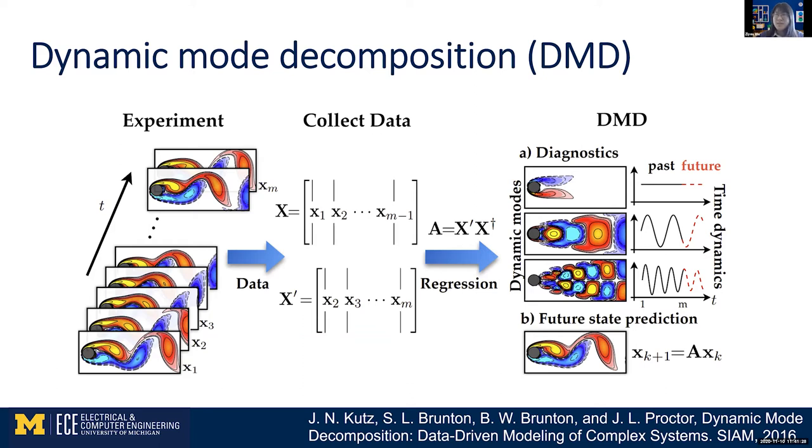So DMD is extremely useful in doing diagnostics. For example, in this case we're having the characteristic vortex flow field to characterize the physics of this dynamical system. And it's also useful for doing future state prediction as we're having this A matrix.